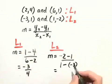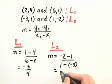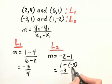When we simplify, we get negative 2 minus 1, or negative 3 in the numerator, and 1 minus negative 3 is 1 plus 3, or 4.